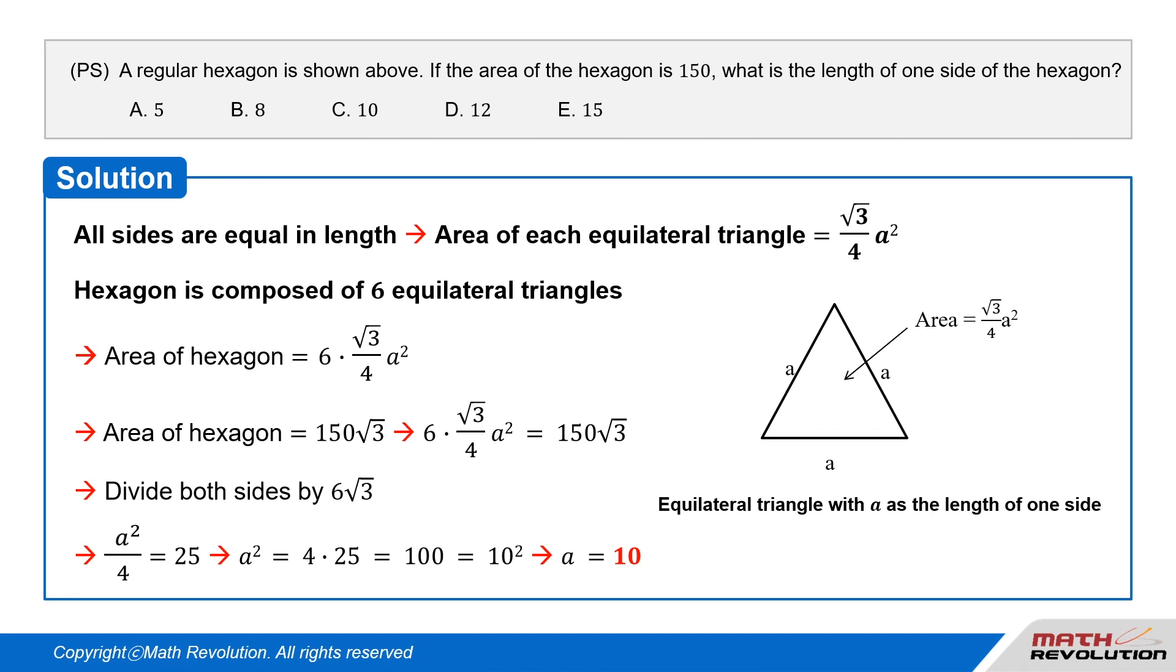A is the length of one side of the hexagon. Thus, C is the correct answer.